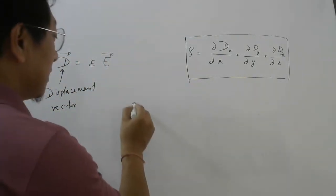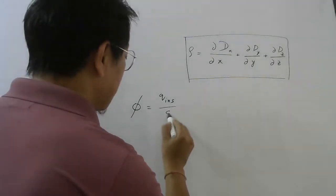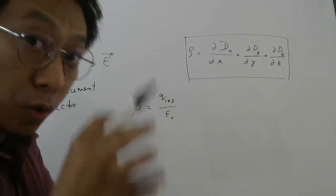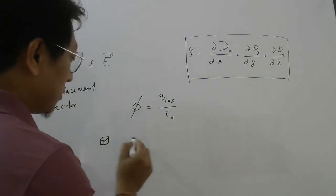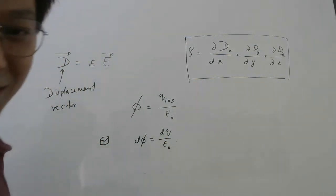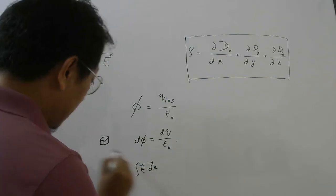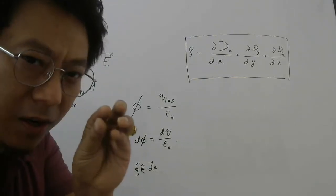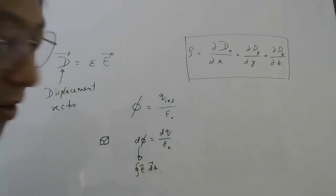The Gauss's law we study in Class 12 says that the electric flux φ through a closed surface equals the charge inside the closed surface divided by ε₀, where ε₀ is the permittivity of vacuum — the problem is done in vacuum. If your closed surface is very small, we can write the flux through that small closed surface as dφ, and the charge inside the small closed surface would also be a small charge dq divided by ε₀.